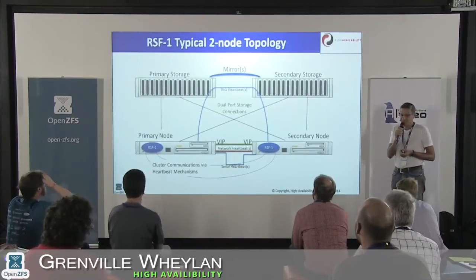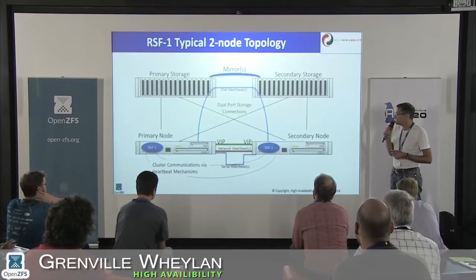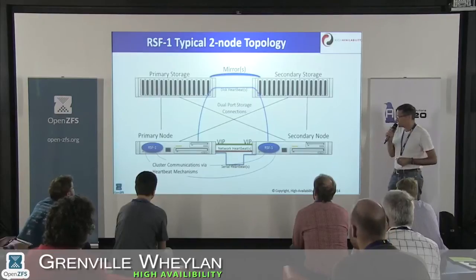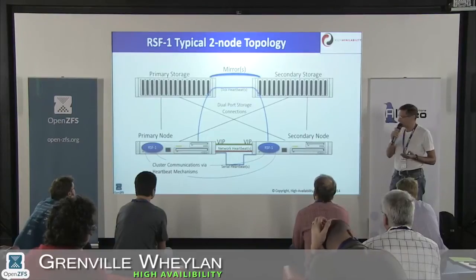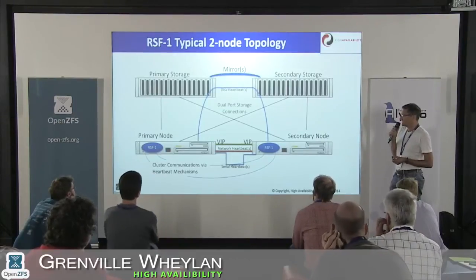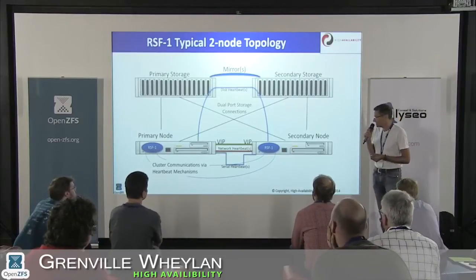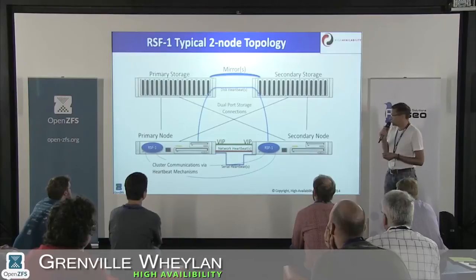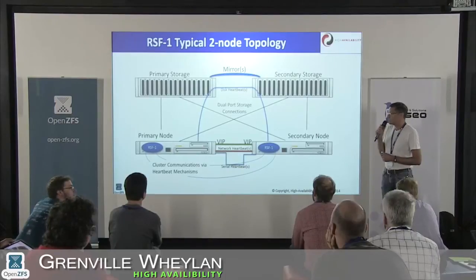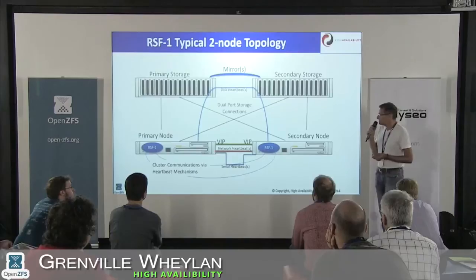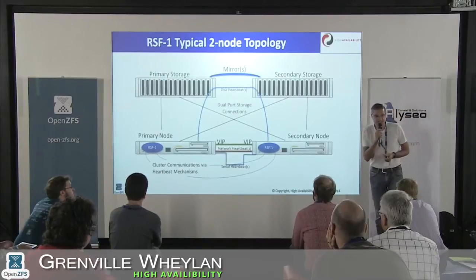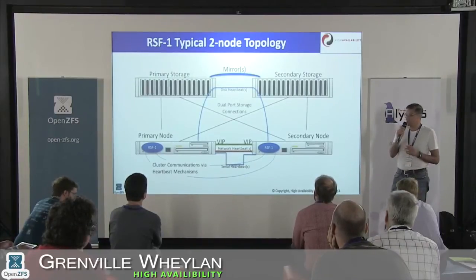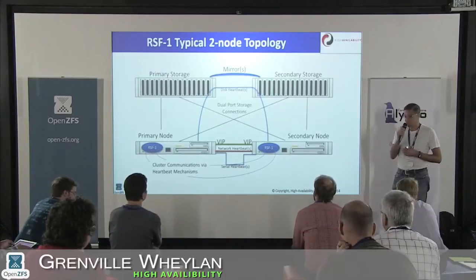To give a typical overview of a two-node topology for RSF: we've got two nodes in active-active capability, where the primary node is running one application or storage pool and the second one also. The interfaces here are the VIP per node that guides users to the relevant machine. In this typical configuration we've got two storage systems that are mirrored, and we have a number of heartbeats between the two nodes that tell us about the health of the cluster. The heartbeats are not just a ping — it's a complete exchange of information about the state of the entire cluster.